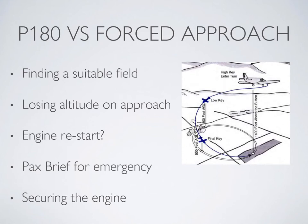The key difference for the forced approach is that you were probably in cruise when this happened. You don't have an airport in sight and you have to find a suitable field relatively quickly. You have to set up an approach profile to lose altitude. You might also have time to see if you can fix the problem and restart your engine. If you have a passenger, you'll need to brief them on the emergency situation. And lastly, since you're probably doing a soft field landing somewhere, you might want to think about securing the engine.